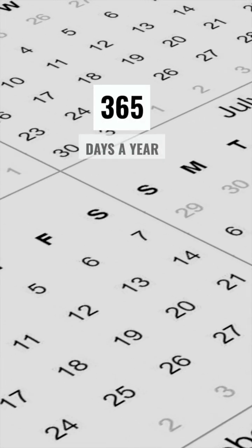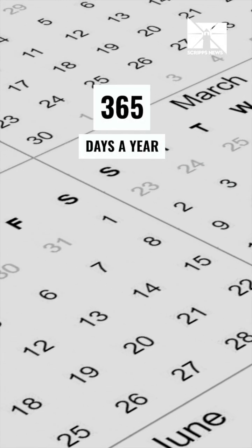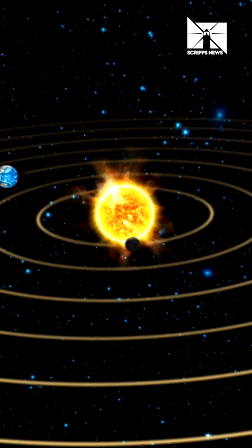There are 365 days a year and that's generally seen as the amount of time it takes for earth to make a full rotation around the sun.